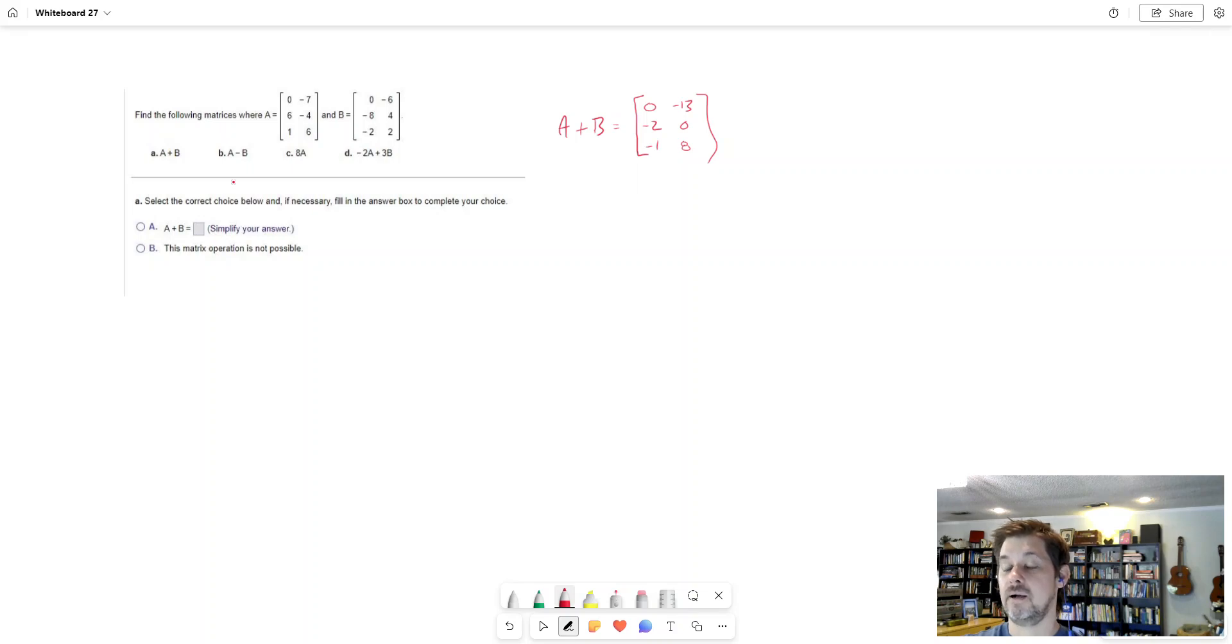Now I'll briefly mention something about part B here. You can subtract matrices once again if they are the same size, and they are here. They each have two columns, three rows. How do you think you do that though? Can't be that much different than adding, and it's not. If I want to take matrix A minus matrix B, here's what I do. I take this entry minus that one.